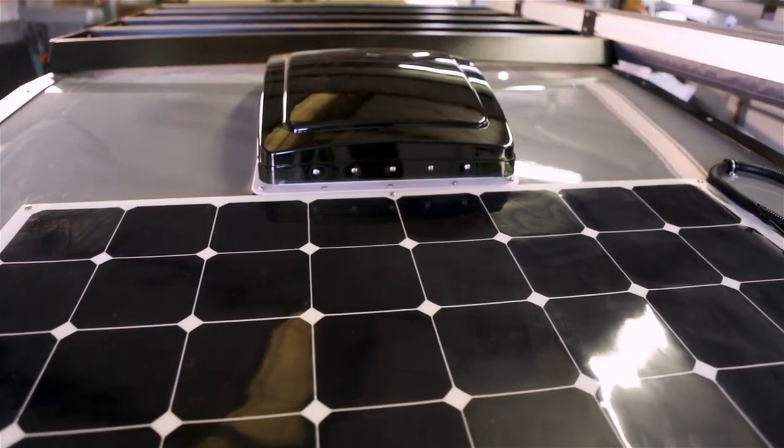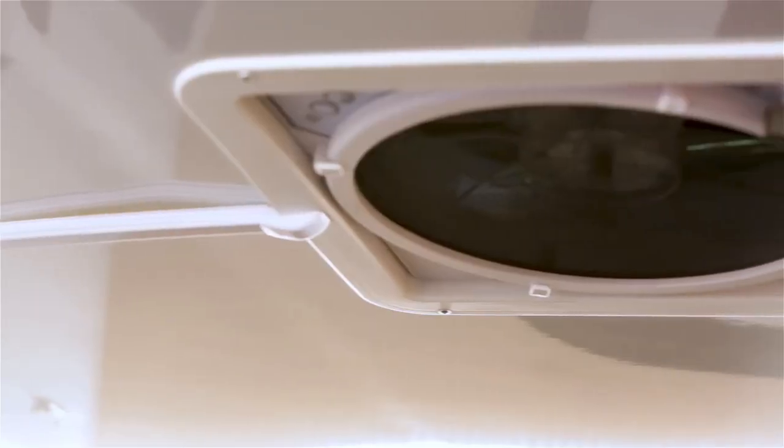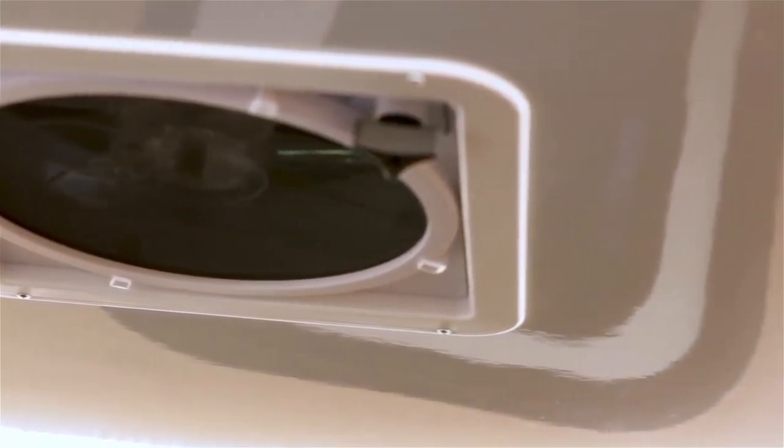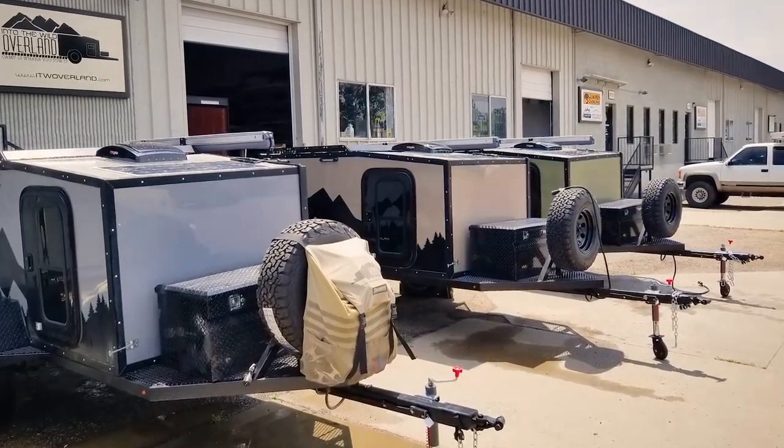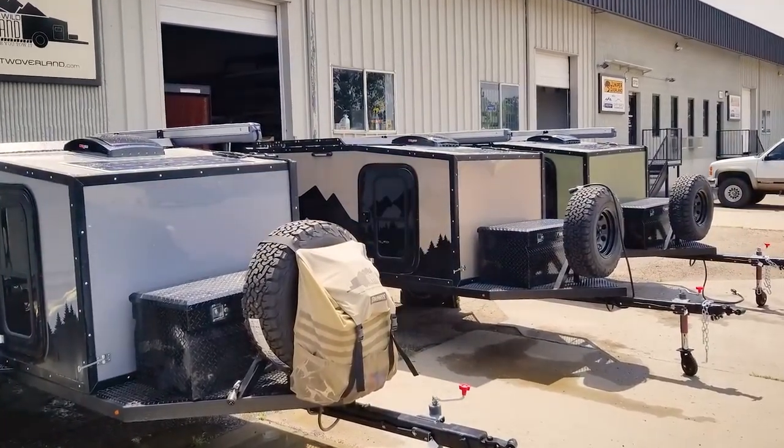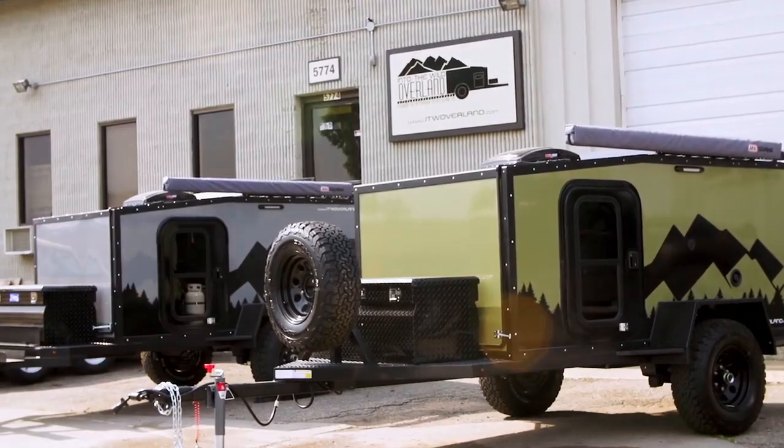Up above we have our max air fan. This is an all-weather fan so you can actually run it open in the rain and snow. You can see here this is one of three color options that we have. This is our forest green. We have a desert tan and a storm gray.